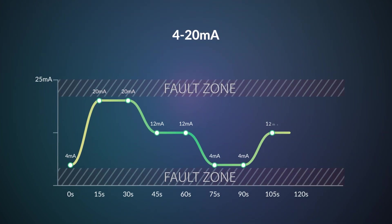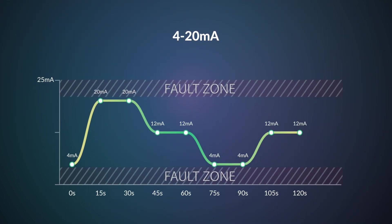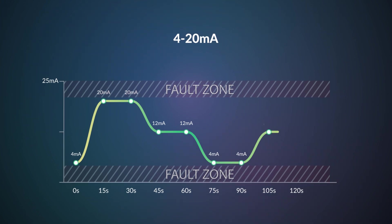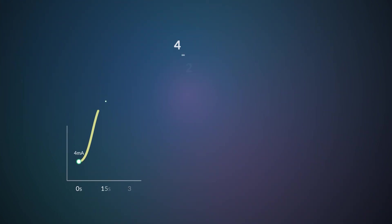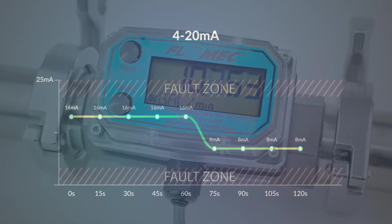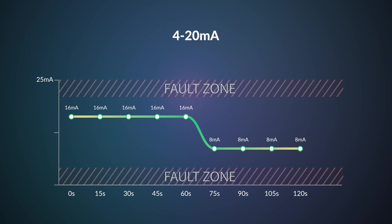Meters with 4 to 20 milliamp outputs function by transmitting an electrical signal with an amperage proportional to the flow velocity recorded by the meter, between the values of 4 milliamps on the low end and 20 milliamps on the high end. 4 to 20 milliamp outputs are well suited to measuring flow rates for blending liquids, since the meter will output a constant current when the meter detects a constant flow.